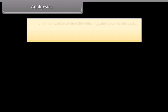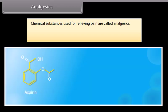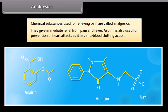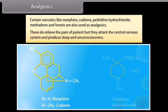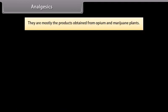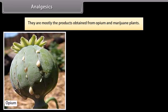Analgesics: chemical substances used for relieving pain are called analgesics. For example, aspirin and analgin; they give immediate relief from pain and fever. Aspirin is also used for prevention of heart attacks as it has anti-blood-clotting action. Certain narcotics like morphine, codeine, pethidine hydrochloride, methadone, and heroin are also used as analgesics. These do relieve the pain of the patient but they affect the central nervous system and produce sleep and unconsciousness. They are mostly products obtained from opium and marijuana plants.